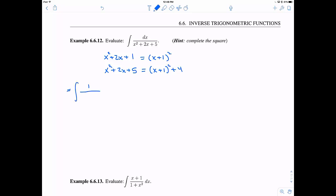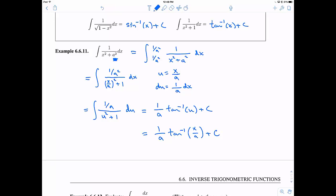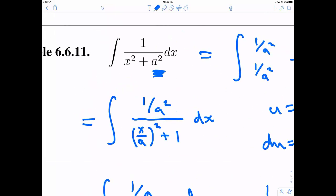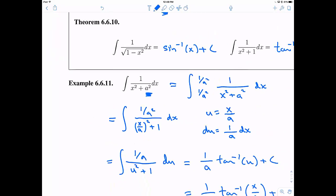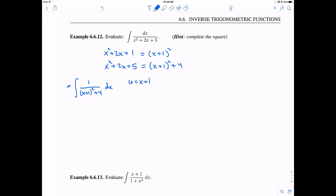So the idea here, instead of integrating our 1 over x squared plus 2x plus 5, we're going to integrate 1 over x plus 1 quantity squared plus 4, is that this looks kind of like tangent inverse. Well, it looks kind of like this, except for instead of x squared, we have x plus 1 squared. And then our a in this case would be 2.